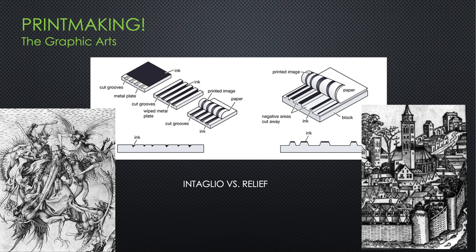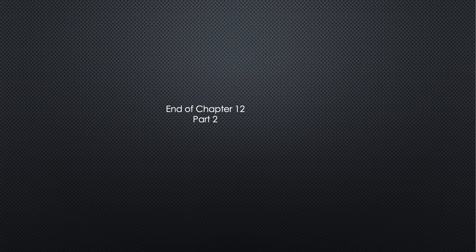Paper and printmaking and oil painting — these are all advances that happened in the early Renaissance in the north of Europe. This brings us to the end of Part 2, Chapter 12, and we're going to Italy next. Be sure to watch Part 3.